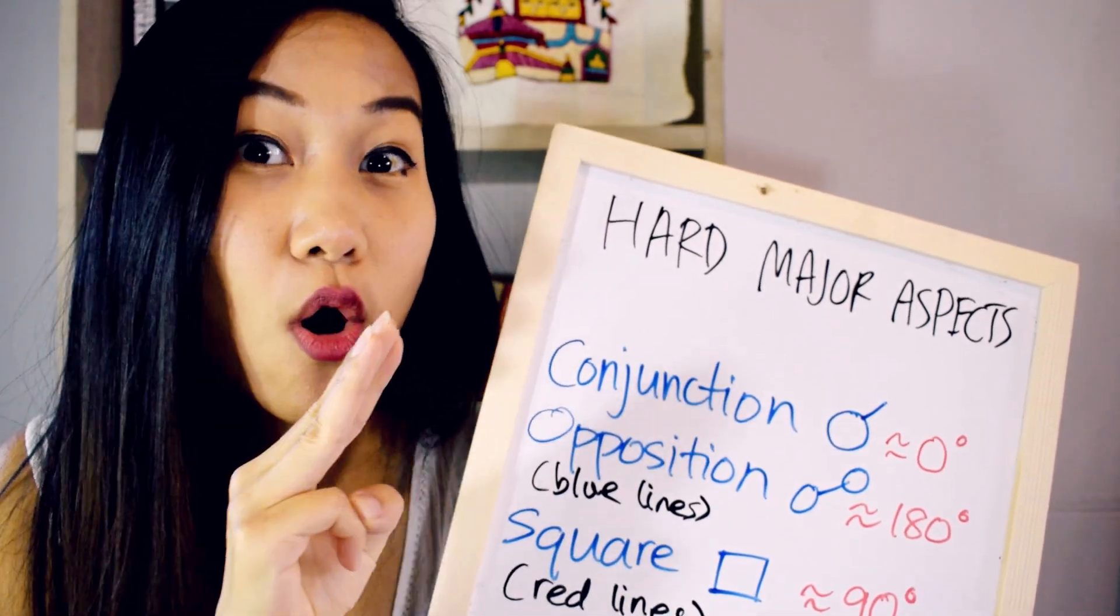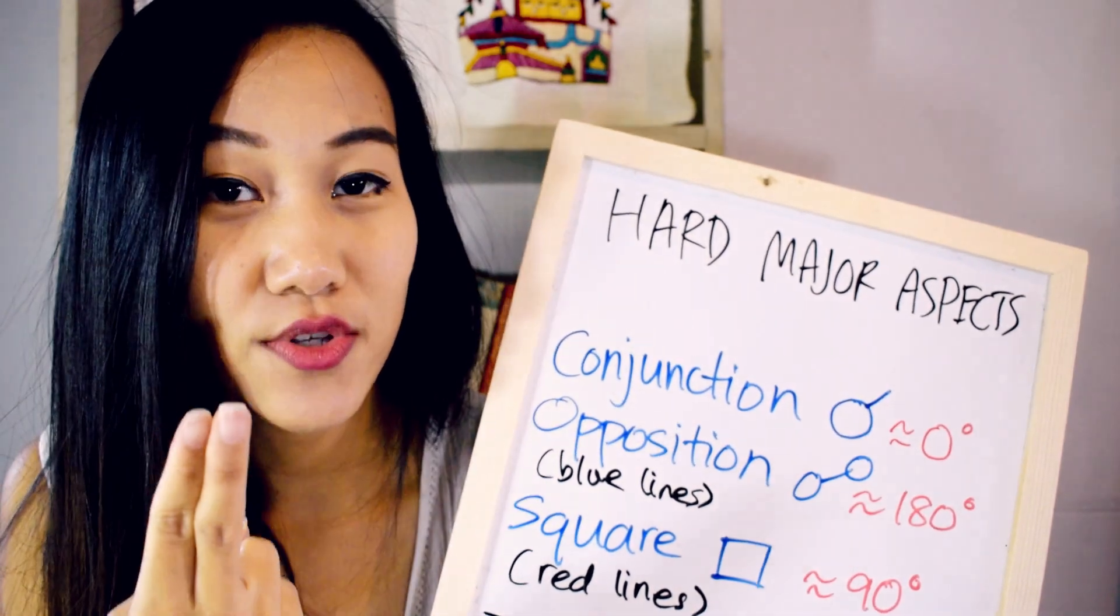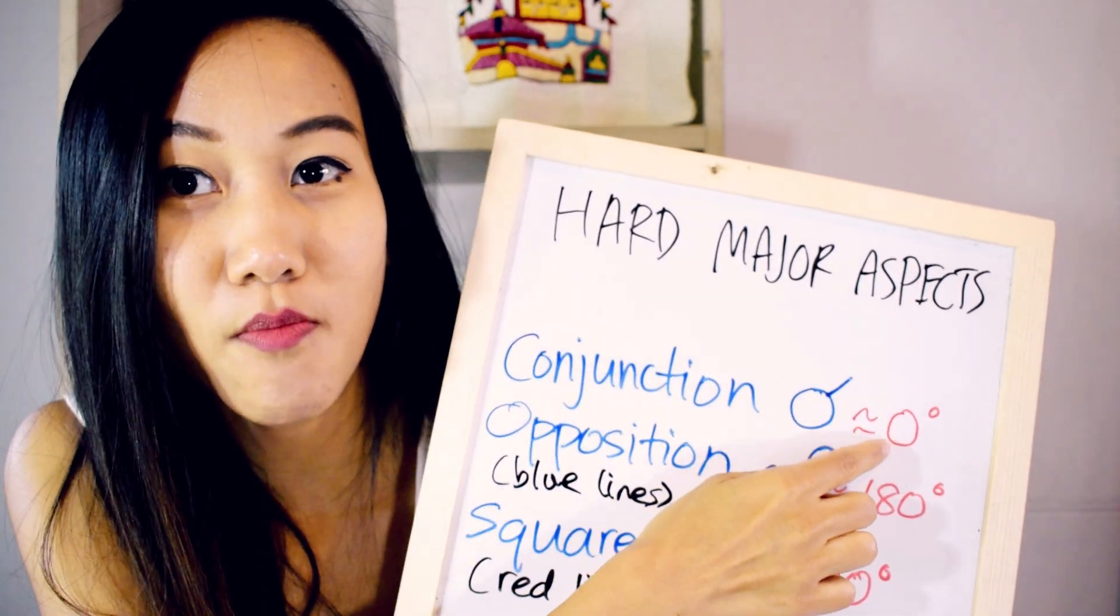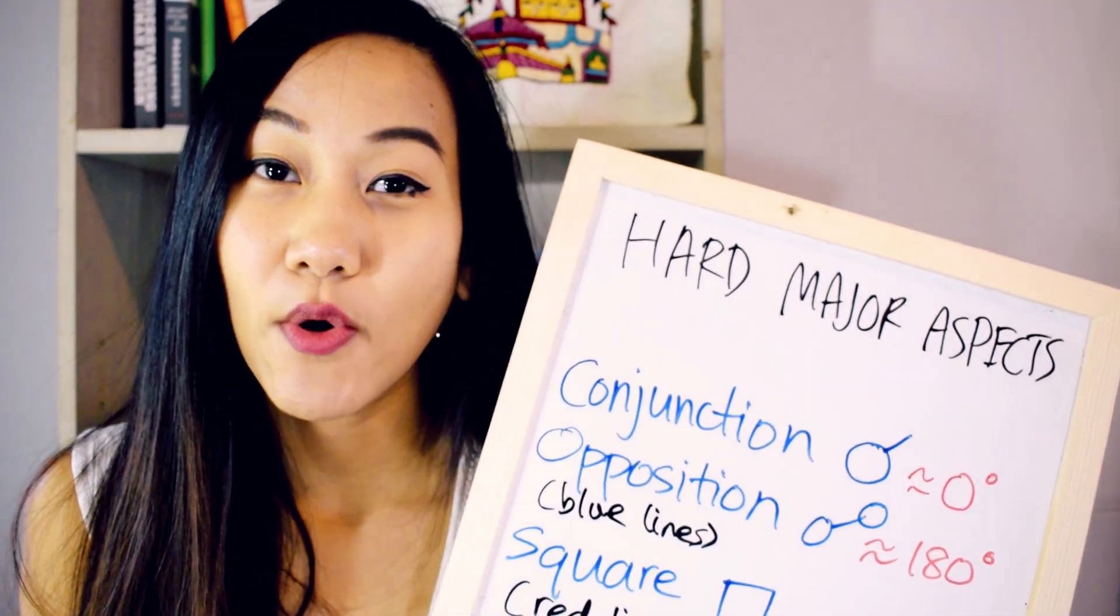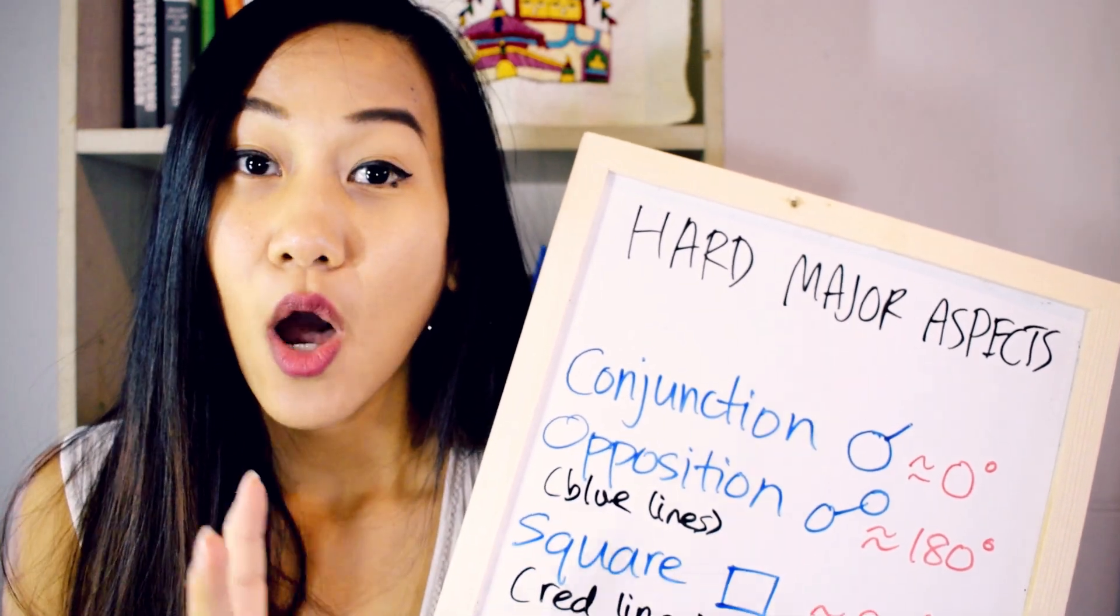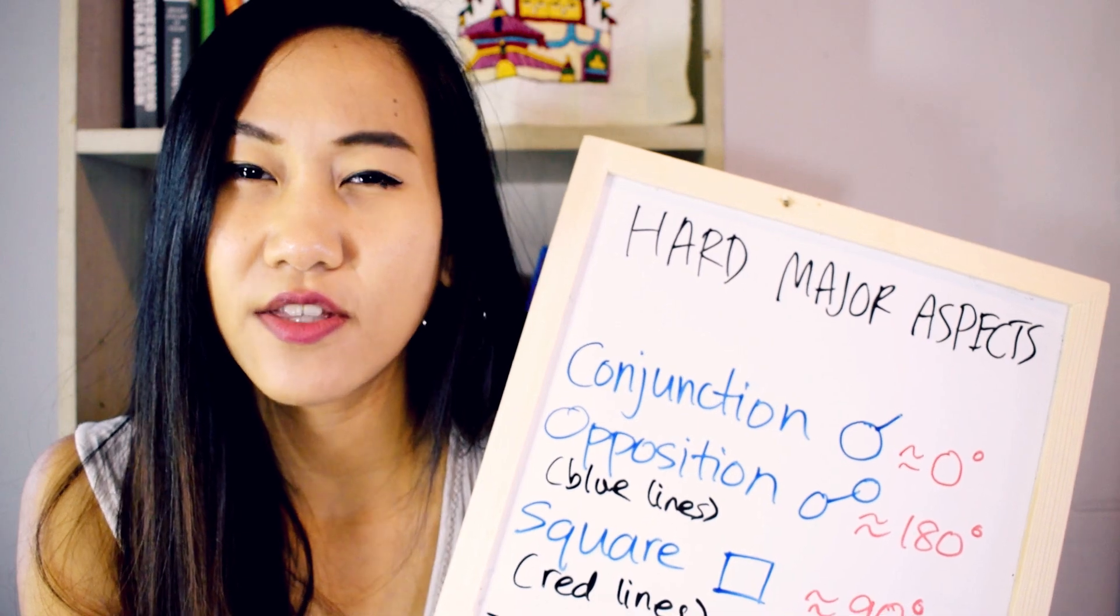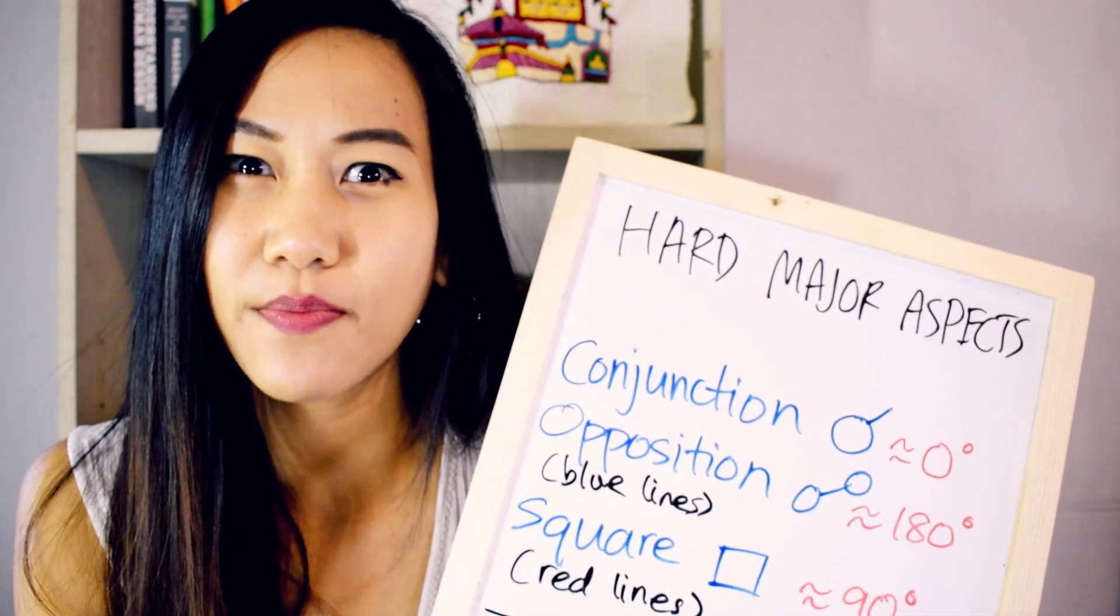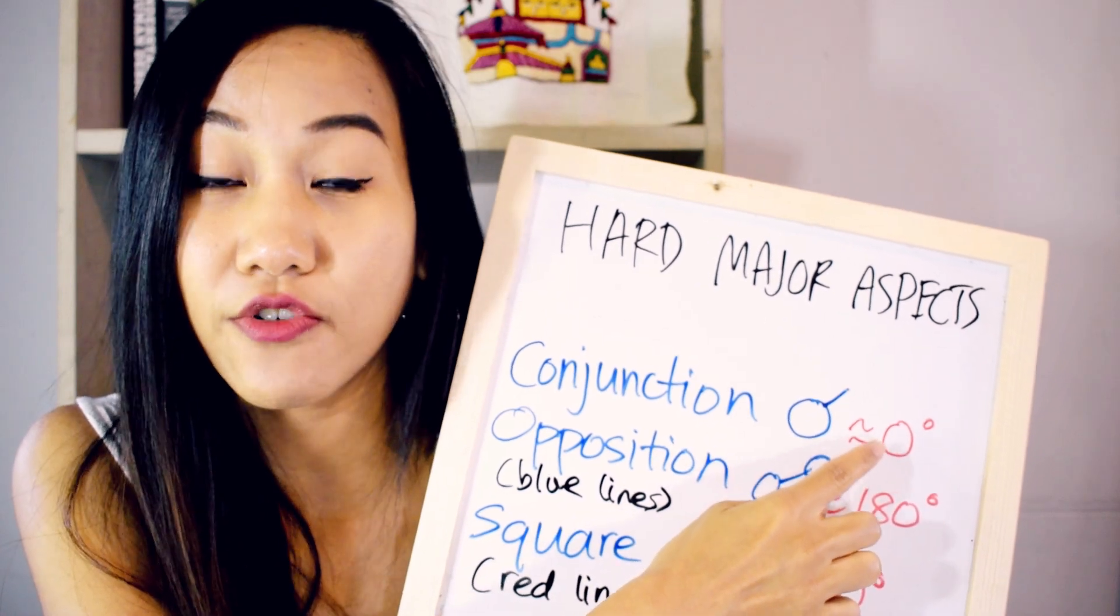We're going to be talking about orbs a little bit later on, but they're very close together, almost zero degrees apart, so they are a conjunction. A Venus in Virgo at 28 degrees and a Moon in Libra at two degrees will also be an out-of-sign conjunction because they're going to be four degrees apart with a four-degree orb. So that's still pretty close to zero degrees, so they will still be considered a conjunction.